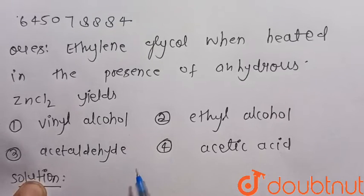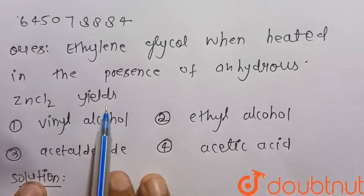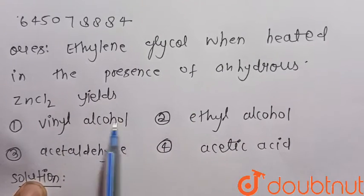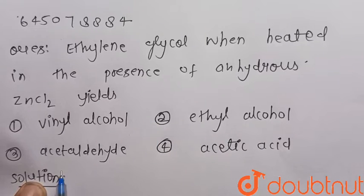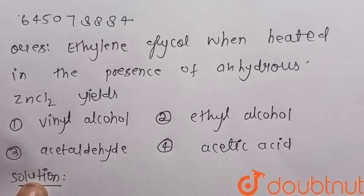Everyone consider the given question: ethylene glycol when heated in the presence of anhydrous zinc chloride yields. So these four options are given. First one is vinyl alcohol, second is ethyl alcohol, third is acetaldehyde and fourth is acetic acid.